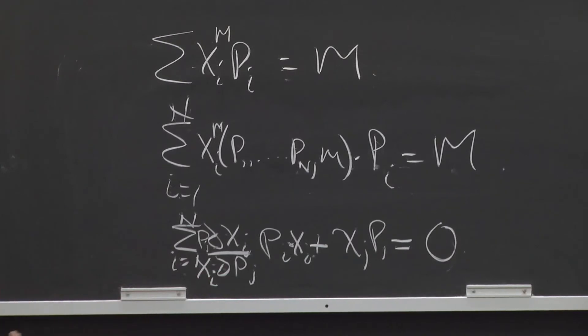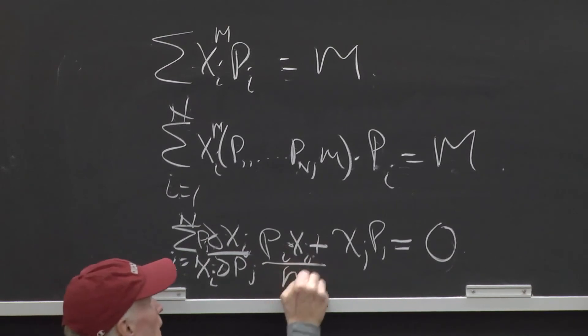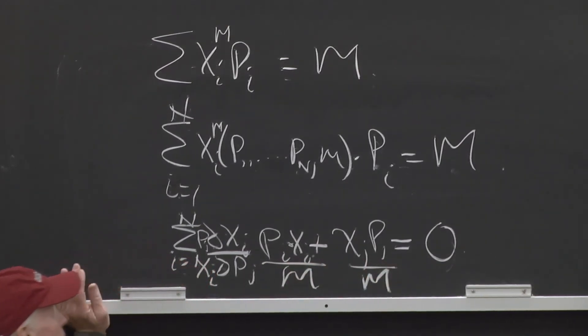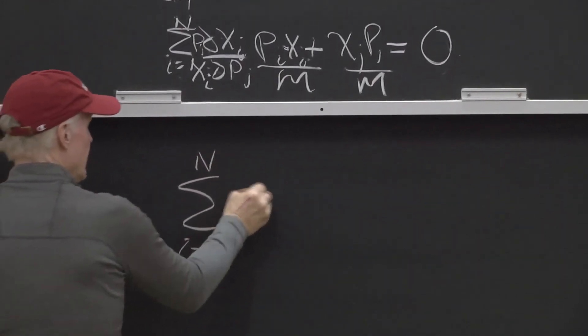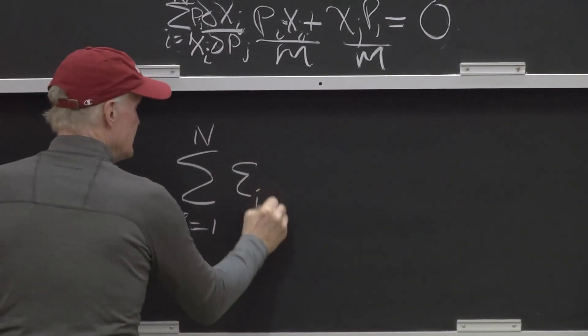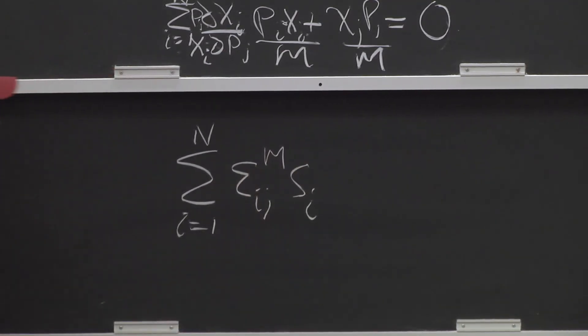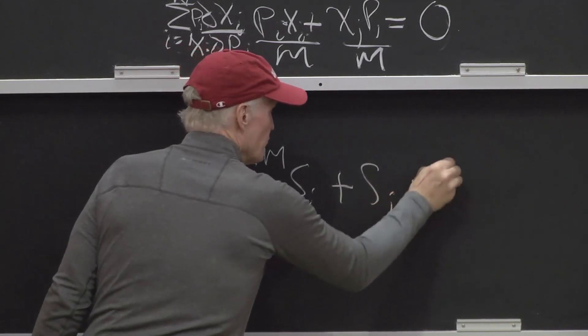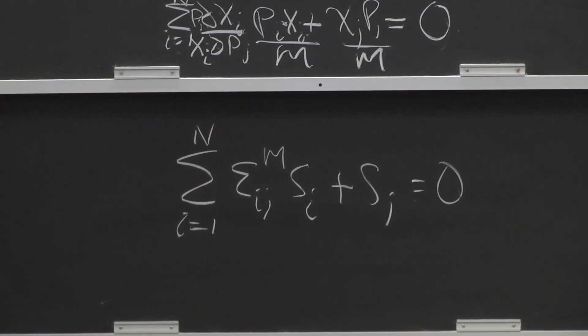And I'll put one here, but I don't have to show that one because it gets multiplied by zero. All right, I'm almost there. What else do I need? Divide by m. All right. So what does it say? Sum i equals 1 to n, epsilon ij m, si plus sj equals 0. That's the adding up equation for the Marshallian system.